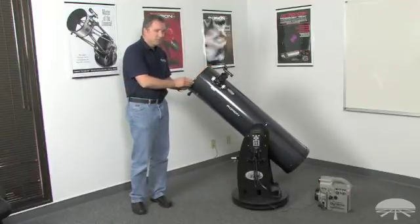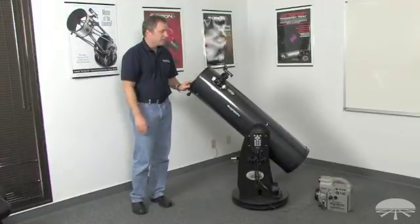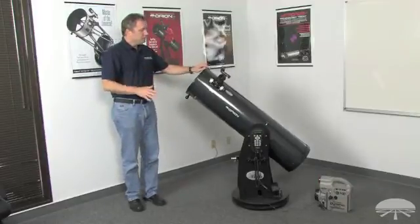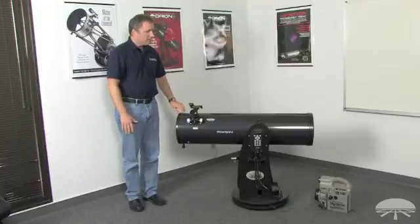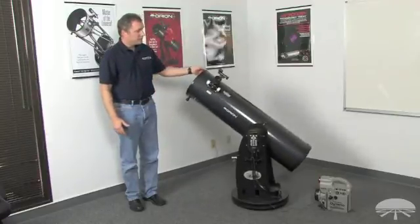Unlike a traditional Dobsonian, you have to keep nudging the telescope to keep the object in the field of view. With the XTG, you don't have to do that. It tracks the motion of the object. The alignment for auto-tracking mode is very simple. You point the telescope north and orient it horizontally, press a button, you're good to go. Now you can track any object you want to look at.